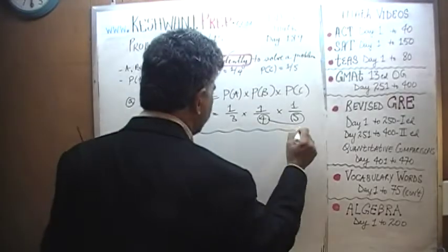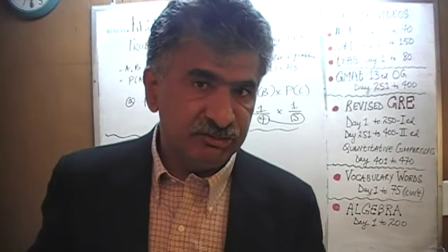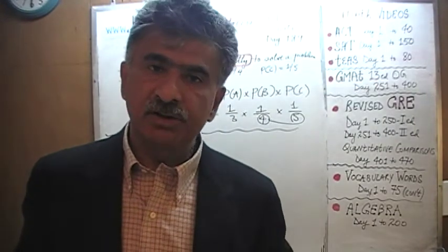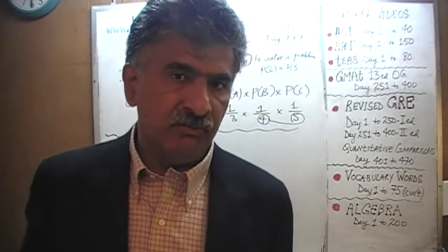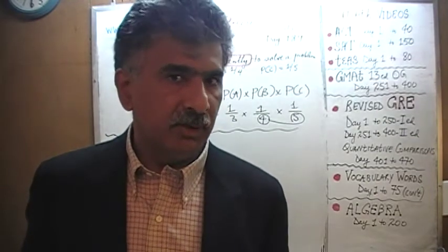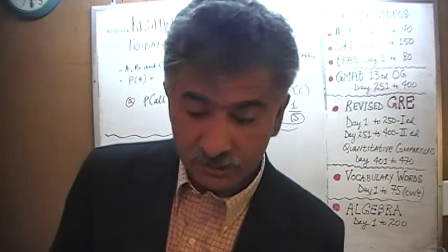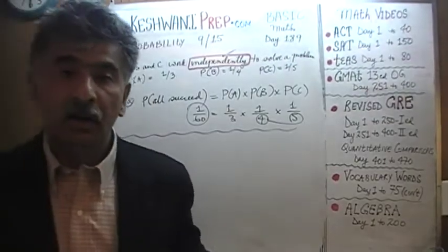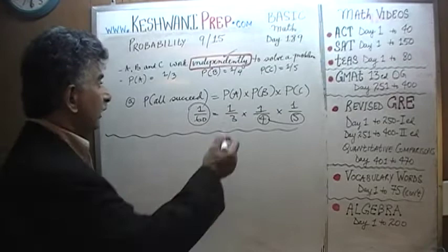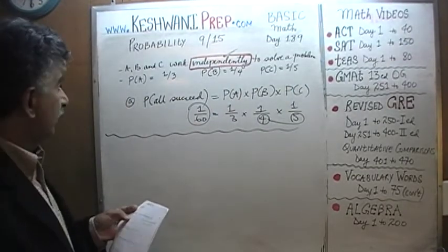In other words, if they were to try 60 times, on average you would find one occasion where all three of them manage to hit the target — given that one person has a 33% chance, another has a 25% chance, and the third has a 20% chance.